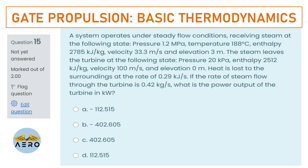A system operates under steady flow conditions receiving steam at the following states: pressure, temperature, enthalpy, velocity, and elevation are given. When the steam leaves the turbine, the consecutive values — pressure, enthalpy, velocity, and elevation — are also given. Heat is lost to the surroundings at the rate of 0.29 kJ/s.